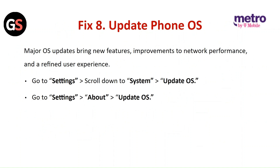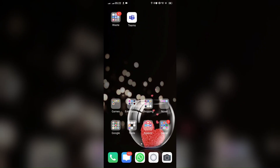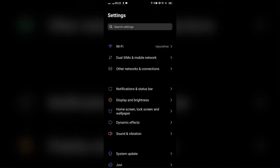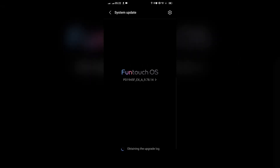Fix 8: Update the phone OS. Major OS updates bring new features, improvements to network performance, and a refined user experience. Go to Settings and scroll down to System, then click on OS update. For Android, go to Settings, then About, then Update OS.